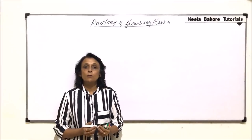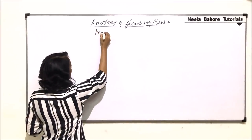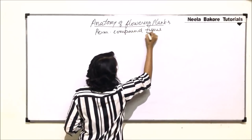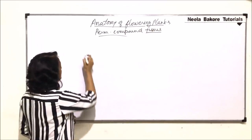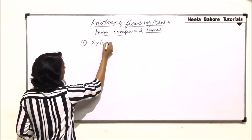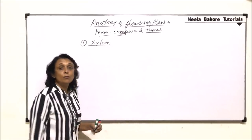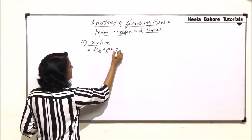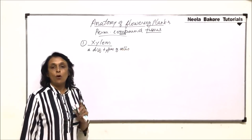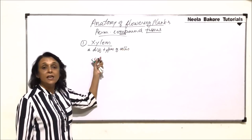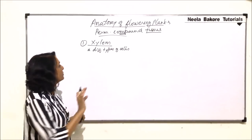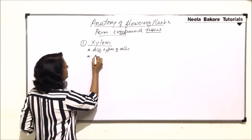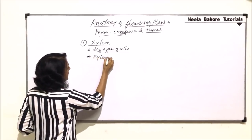We will now be discussing the permanent compound tissues. In these compound tissues we have to talk of two: xylem and phloem. First let us talk about xylem. As we are talking about xylem under compound tissue, that means xylem is made up of different types of cells. All the cells which make xylem are called xylem elements.